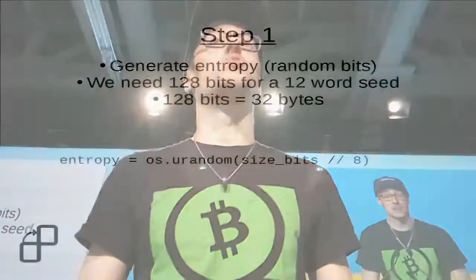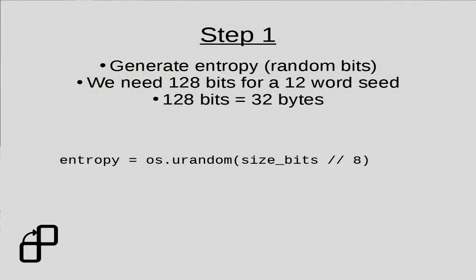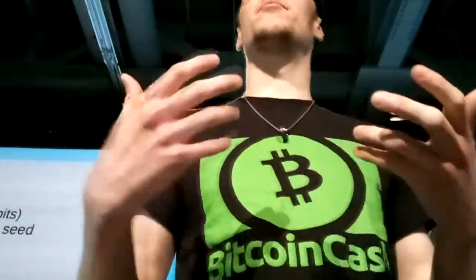Step one is we're going to generate some entropy or randomness. We need 128 bits for a 12-word seed, and that's 32 bytes. In Python, we can use the os.urandom function to get this randomness, and that uses the OS's underlying random number generator, like /dev/urandom in Linux.